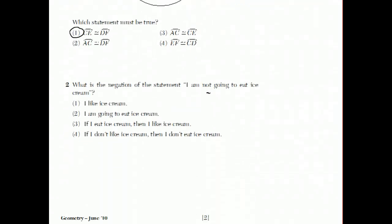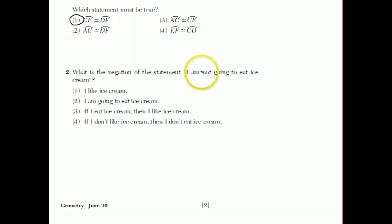Moving on to question number two. What is the negation of the statement, I am not going to eat ice cream? Well the negation of the statement is, it's kind of like putting the word not in front of the entire statement. So instead of saying I am not going to eat ice cream, it's not true that I am not going to eat ice cream, which is the same thing as saying that I am going to eat ice cream. And that's choice two.